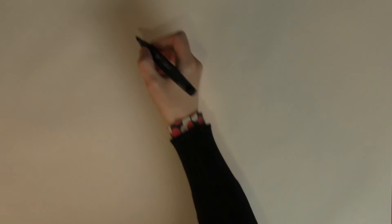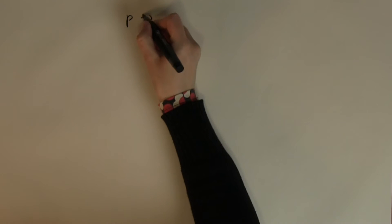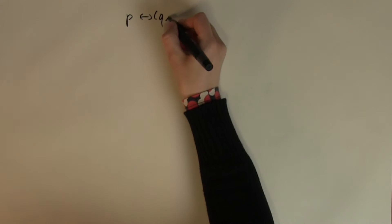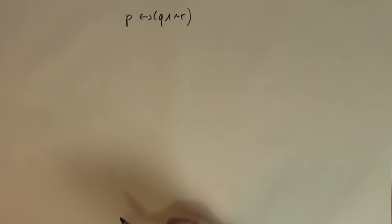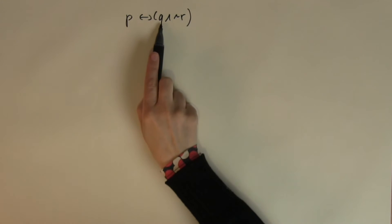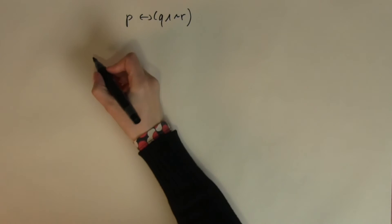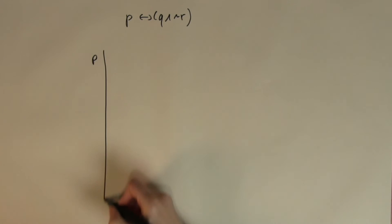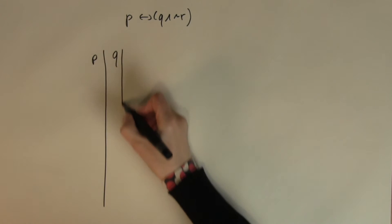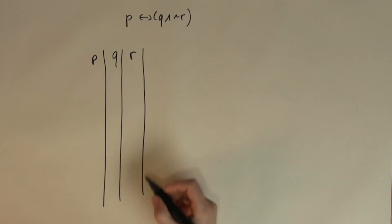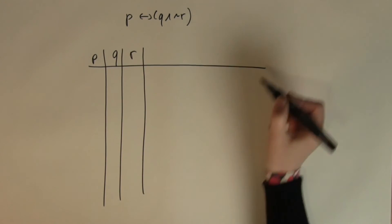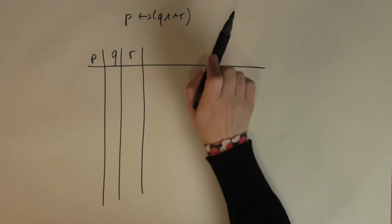And now let's look at the last example for this video. P if only if Q and NOT R. So, this is a similar example to the previous one because P, Q and R again have got three different inputs.